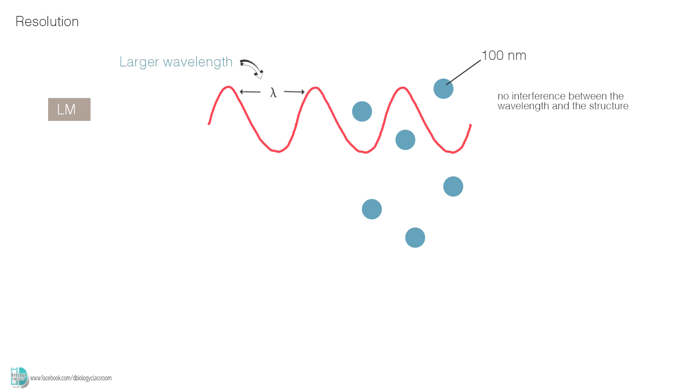The theory behind this has to do with the interference of the wavelength with the structures you want to observe. Let's say you are trying to view a structure which is 100 nm. When you use the light microscope, due to the large wavelength of visible light, there is no interference between the wavelength and the structure. So, you can't see them under the microscope.